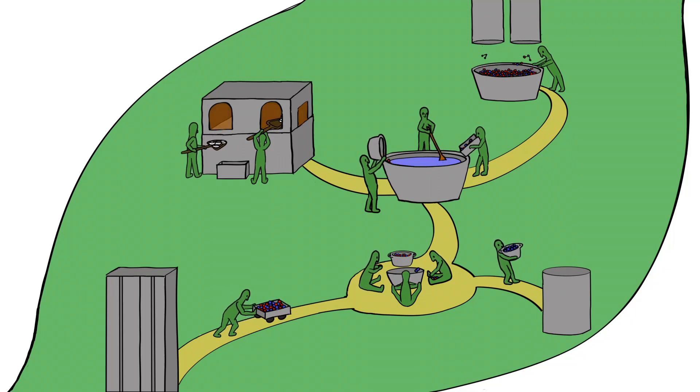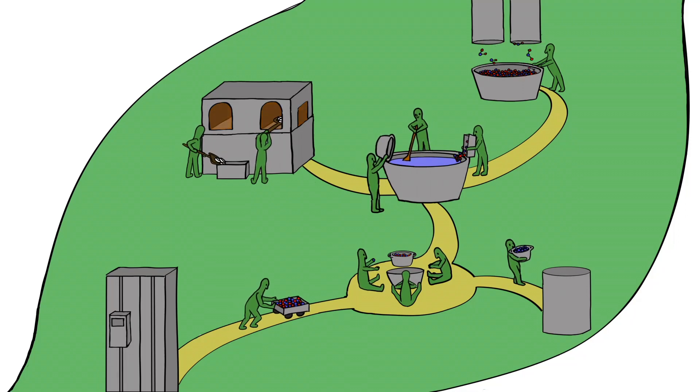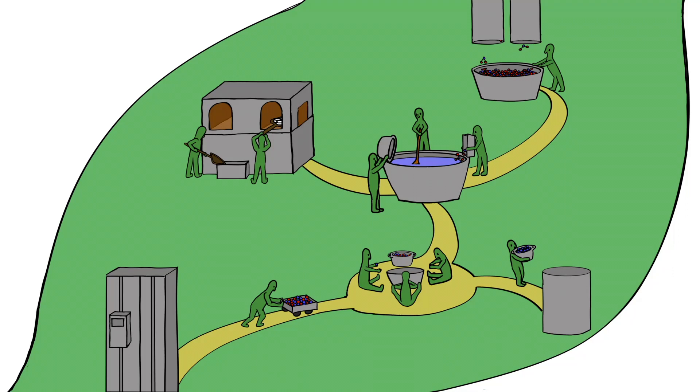Now, of course, there are not really green men in this leaf, but it's one way that we can help children use their imagination to think about how the leaf makes food for the rest of the plant.